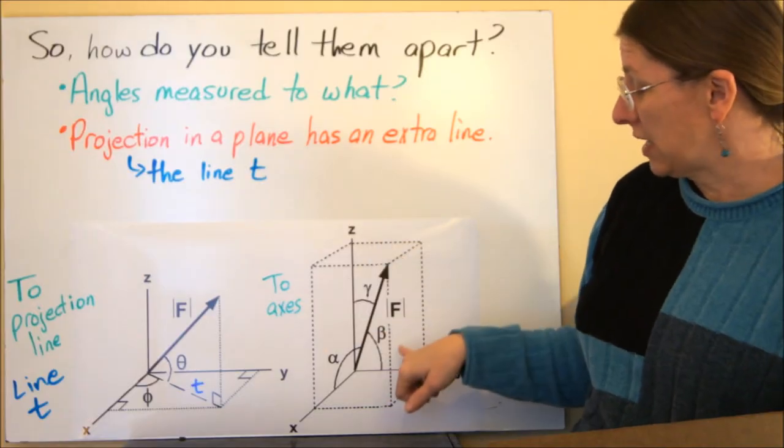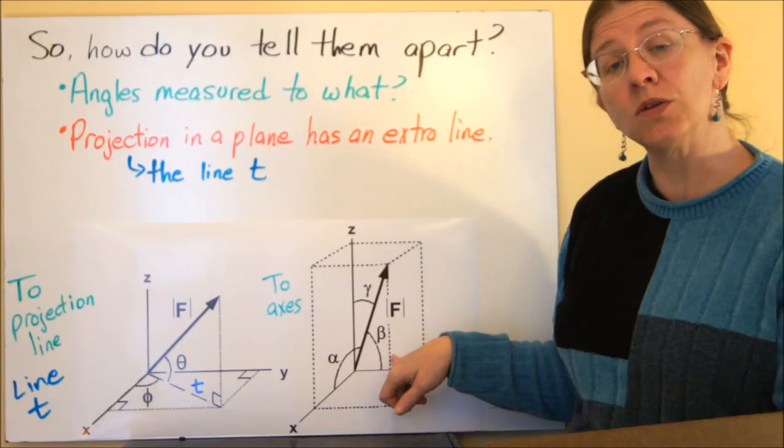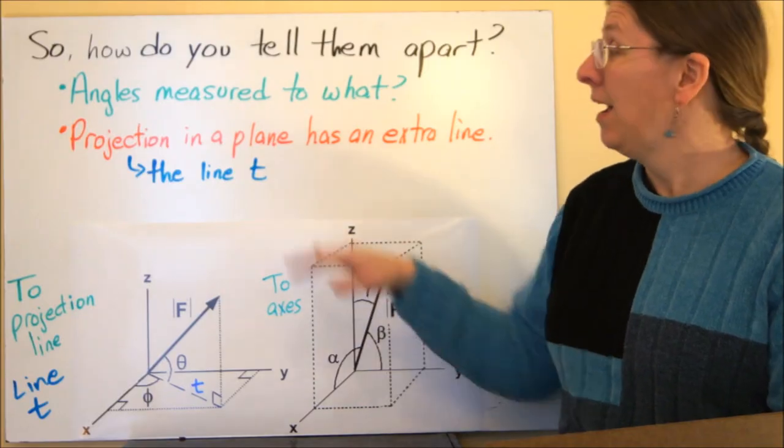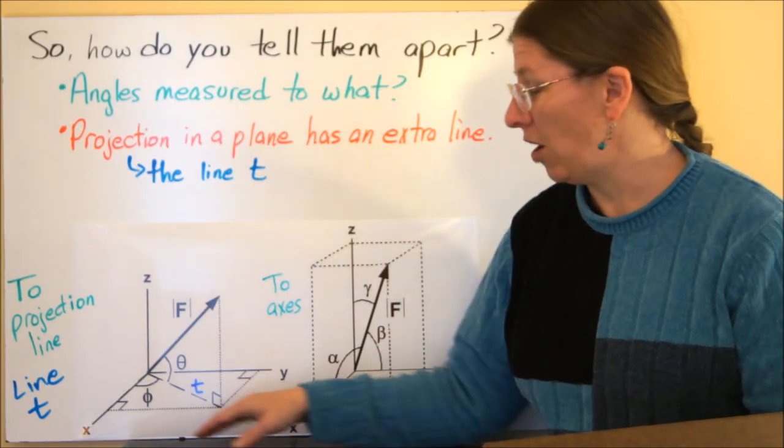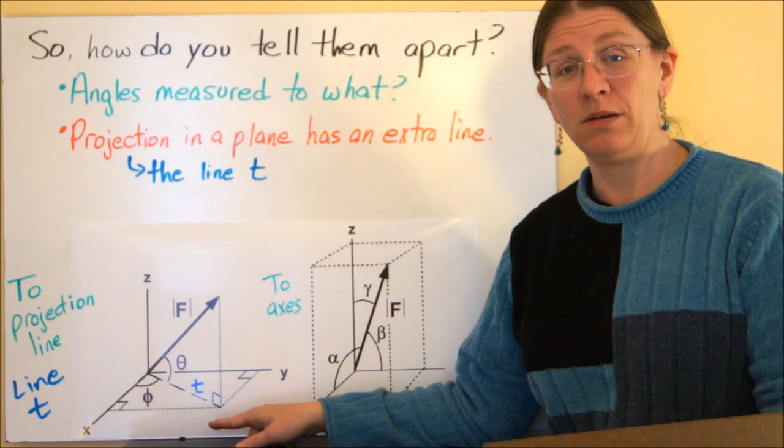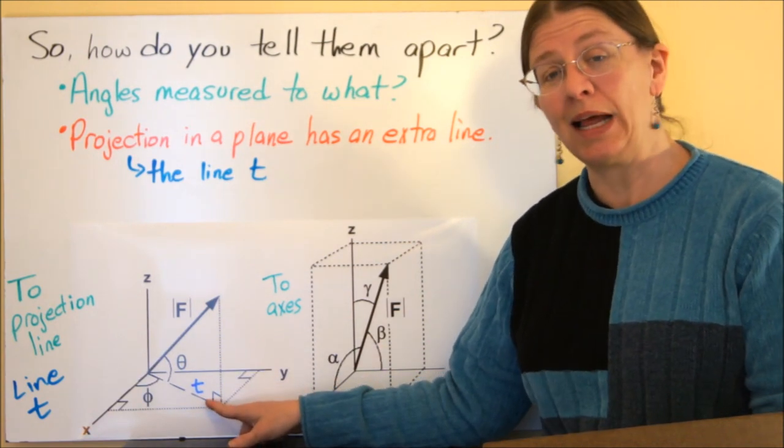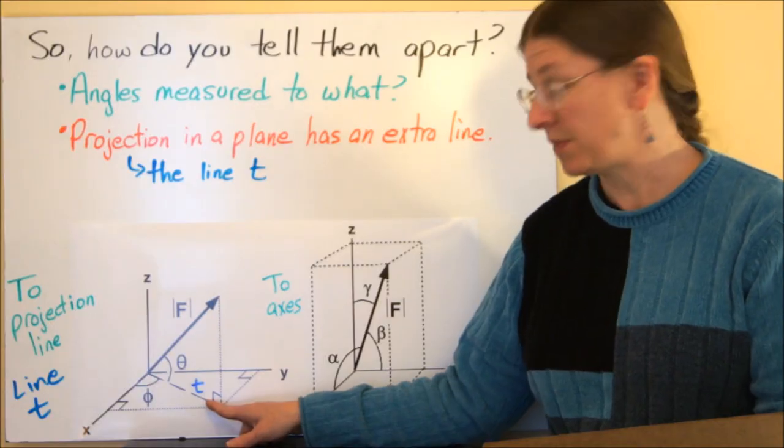And the other one is that a projection in a plane always has this extra line in it somewhere. So you'll still have a force in two angles, but they are measured to the projection line T, not to the axes themselves.